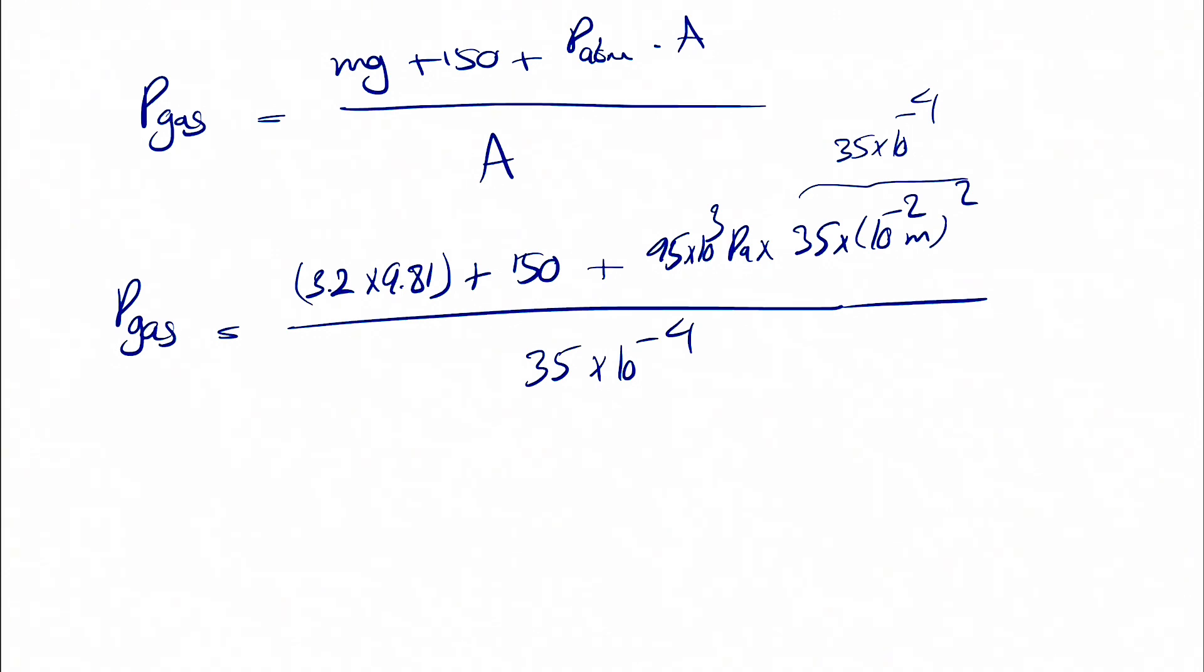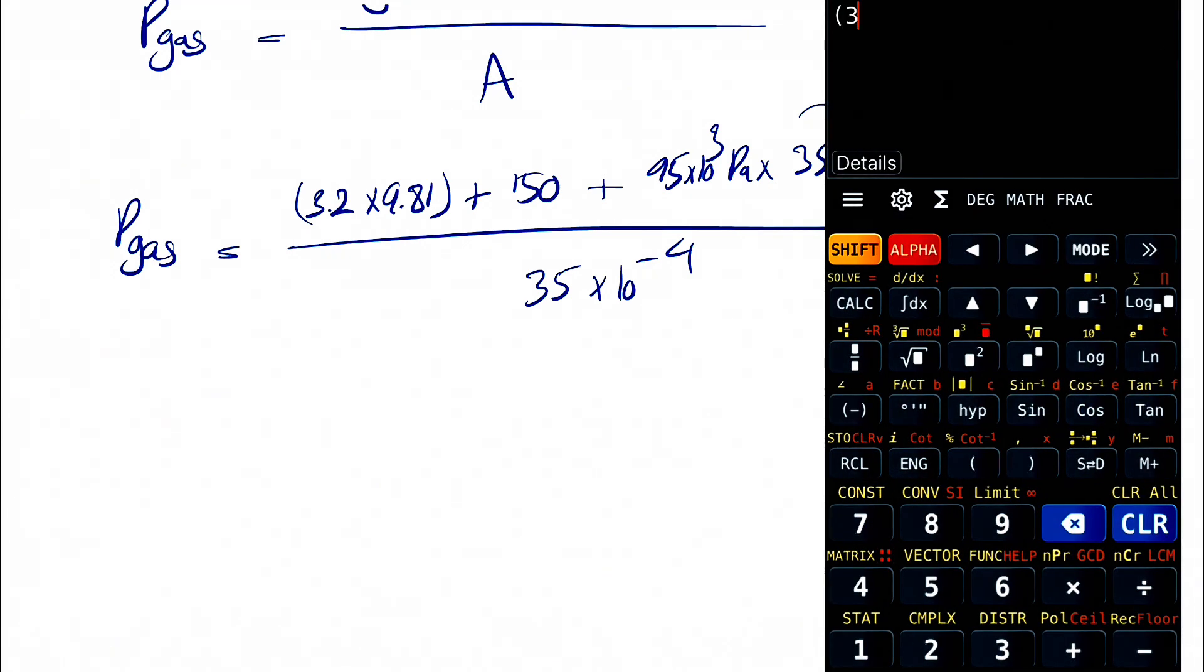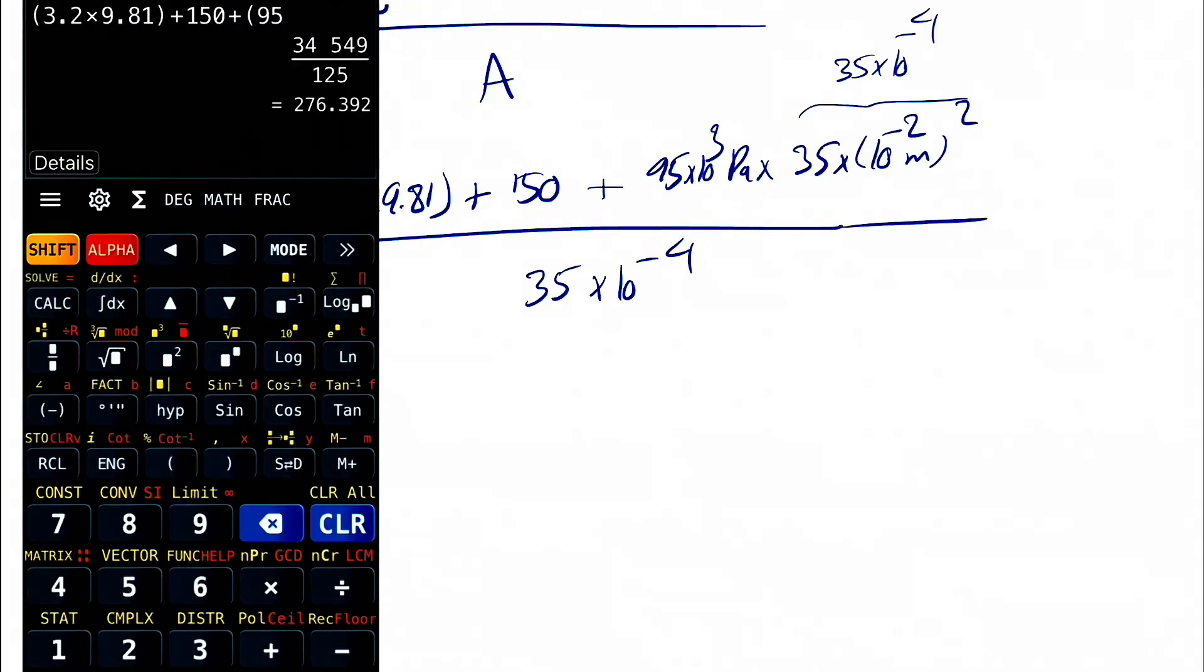And this should give us the final answer in Pascal. Let's see what we get. So we're going to have 3.2 times 9.81 plus 150 plus 95 times 35, and 10³ and 10⁻⁴ will be 0.1. This is going to be that, and we're going to divide that by 35.